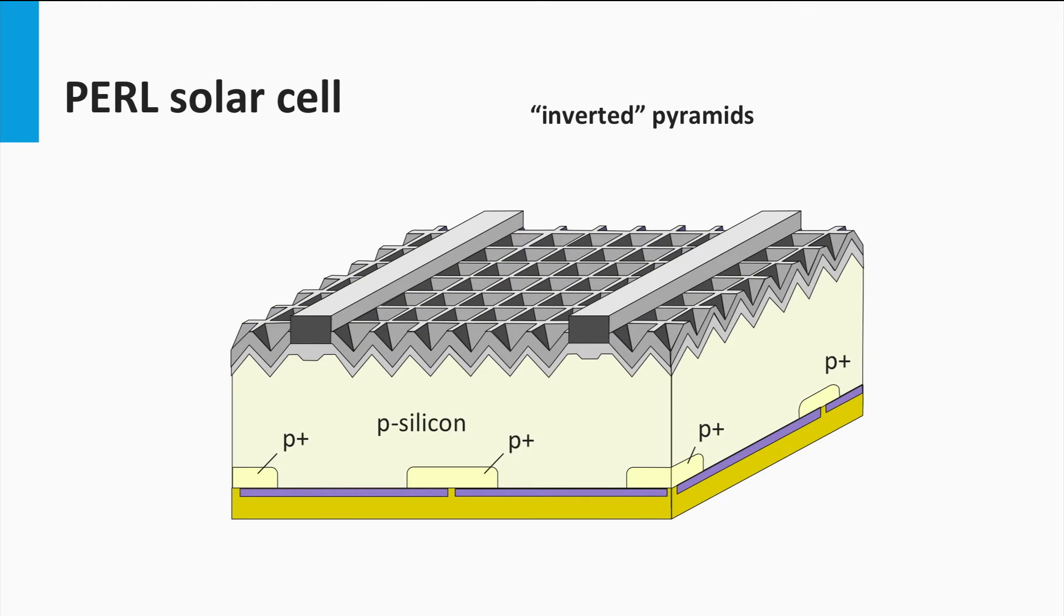At the rear surface of the solar cell, point contacts have been used in combination with thermal oxide passivation layers. The oxide operates as a passivation layer of the non-contacted area to reduce the unwelcome surface recombination.